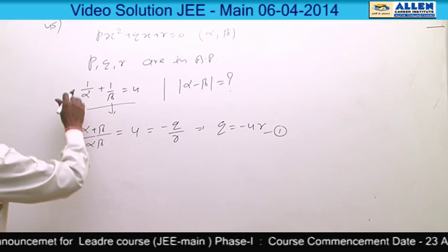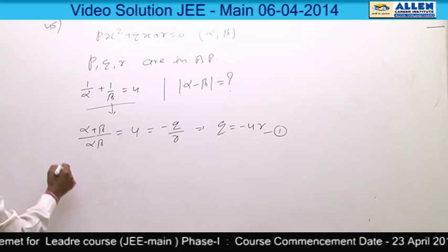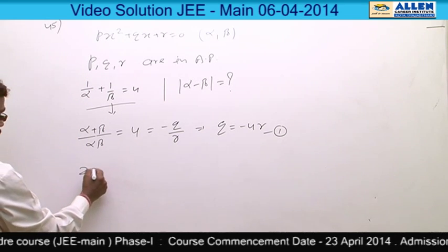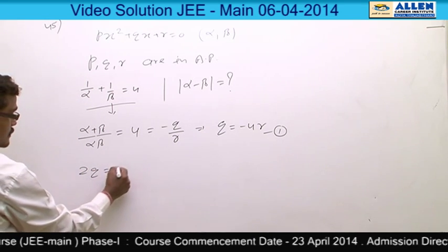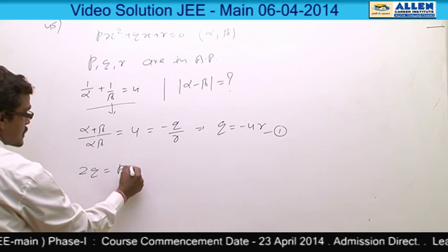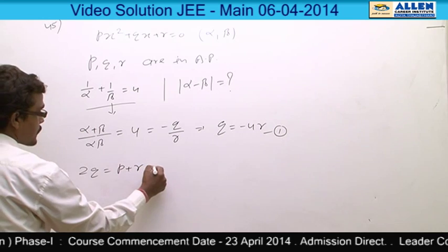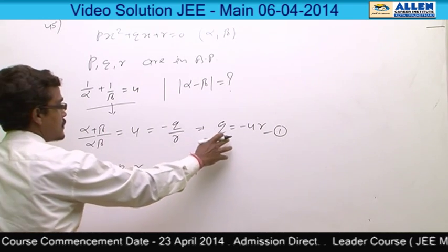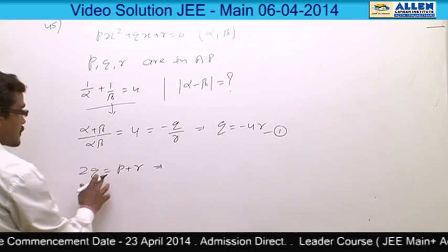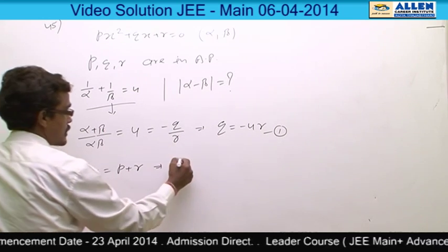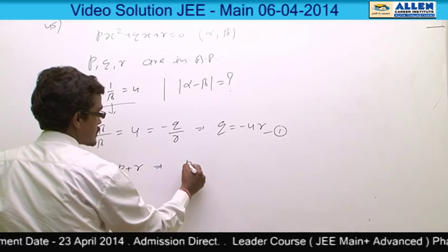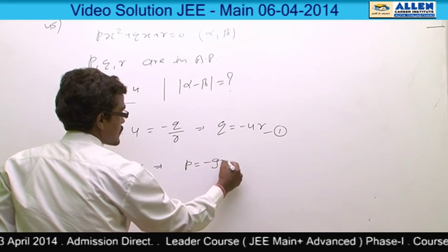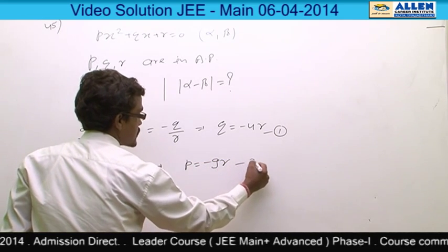From the second relation — p, q, r in AP — we get 2q = p + r. Replacing q = -4r into this equation, we get p = -9r. Let this be equation 2.